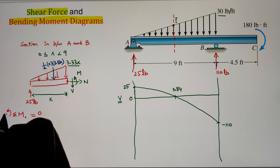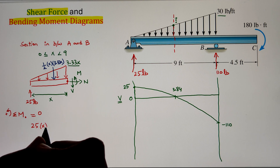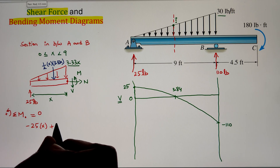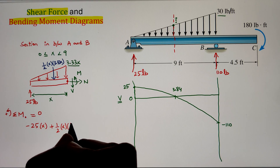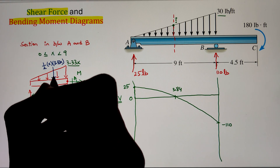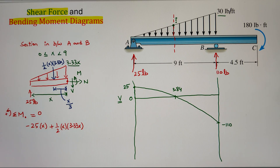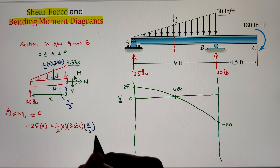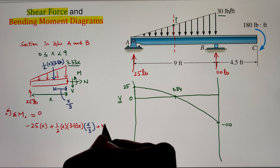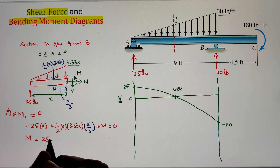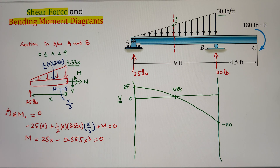Next, we can write our summation of moment equation at the section so that our shear force V won't contribute to the moment expression. We can start with the 25 pound force that has a moment arm of X making a clockwise moment. Next, I have the point load of half times X times 3.33X. This load is acting at the centroid of the triangle that is one-third from the higher side, so the moment arm will be X over 3. Multiplying those gives our moment value in the counterclockwise direction. Finally, I have the couple moment M in the counterclockwise direction so that is added. Let's plug in the values of X at the extremes and at the point of inflection of 3.84, because at this point we will get our maximum value of moment.